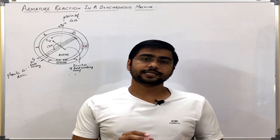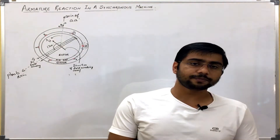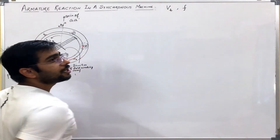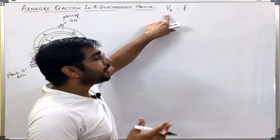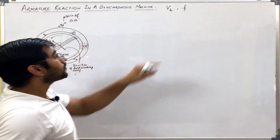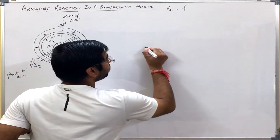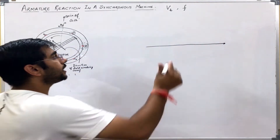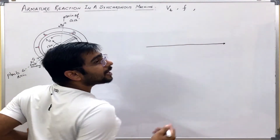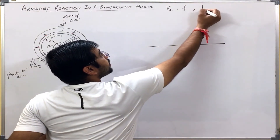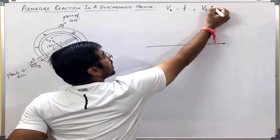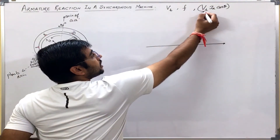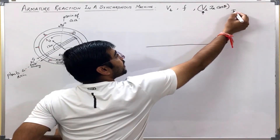For this part, I will assume that the synchronous generator is connected to an infinite bus. What does it mean? An infinite bus means that the terminal voltage will be constant and the frequency will also be constant, no matter how much input power is increased or the excitation is increased. So let us take this is Vt. We are also taking that the input power is the same, that is the power output is the same. If input is the same and if I neglect the losses, then output will also be the same. Then Vt·Ia·cos(theta) will be the output power of the generator.